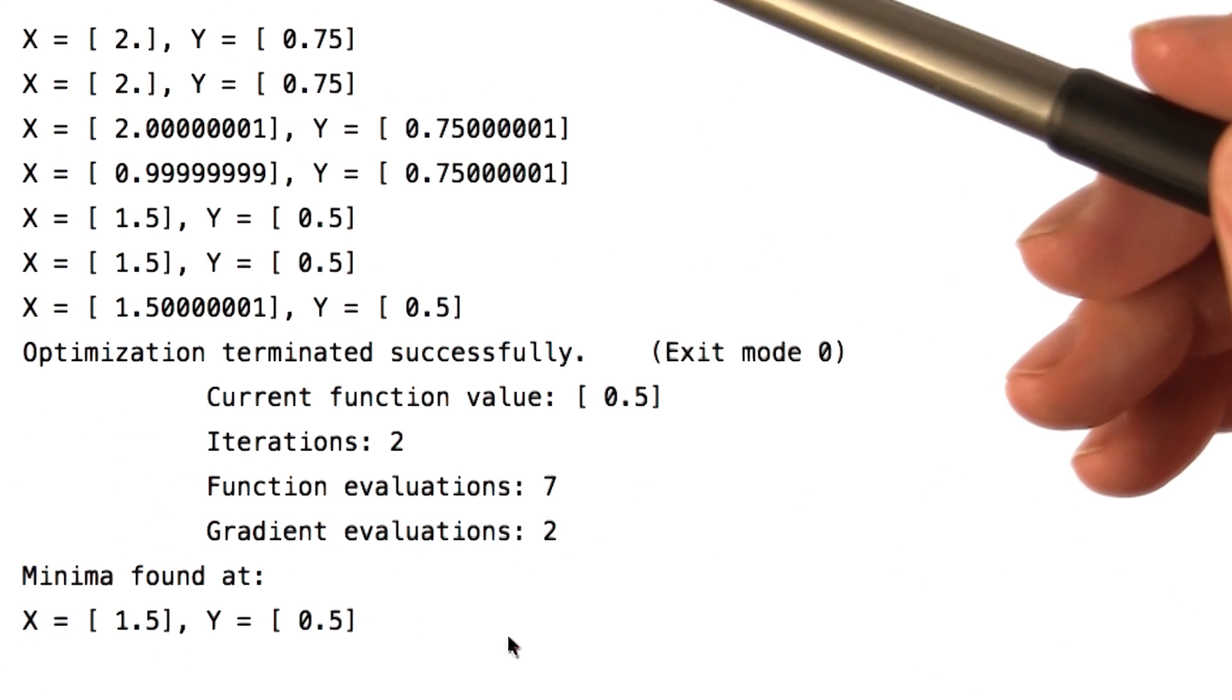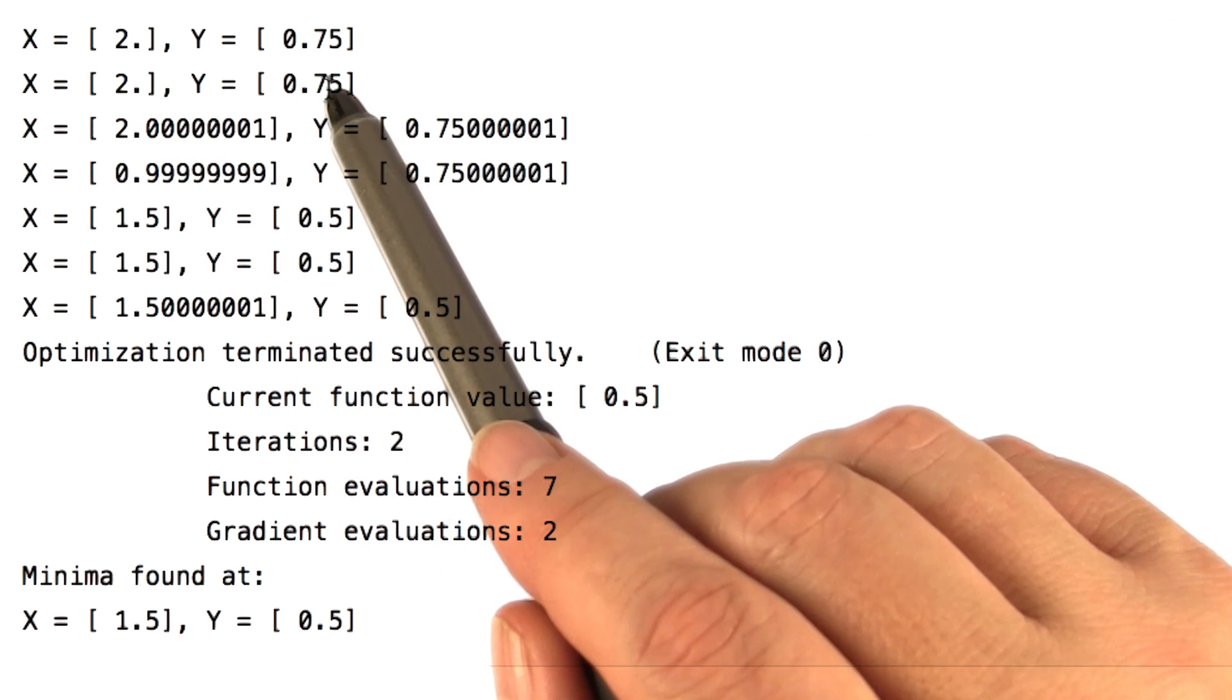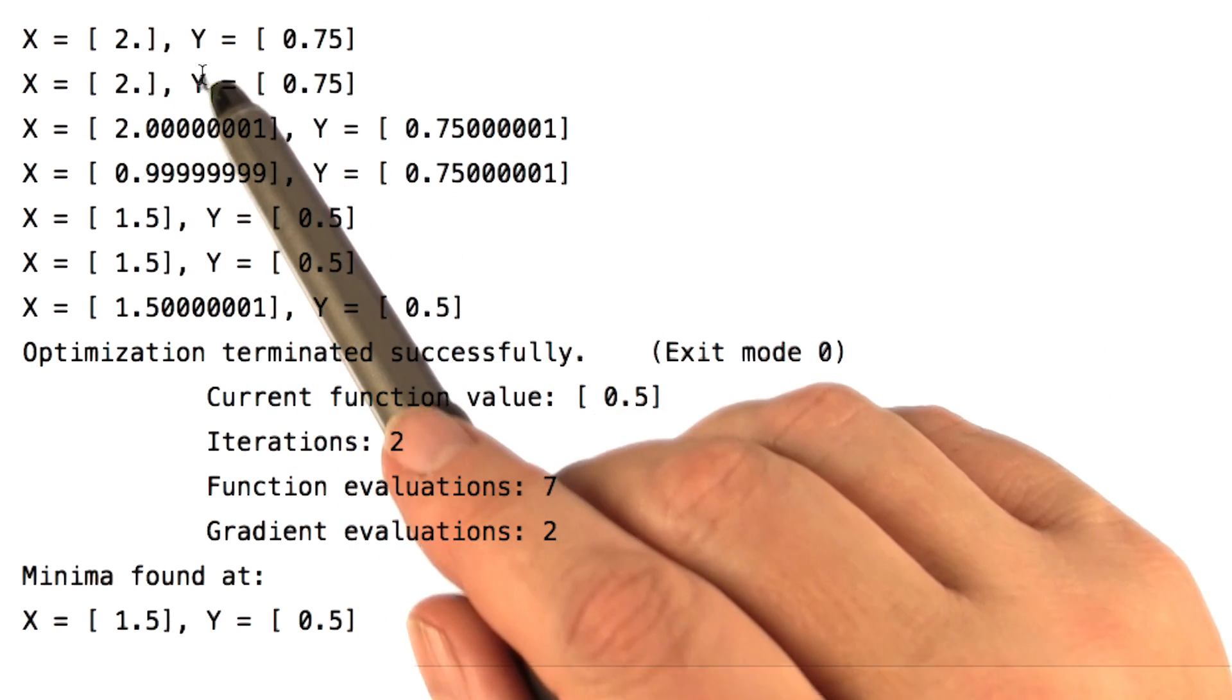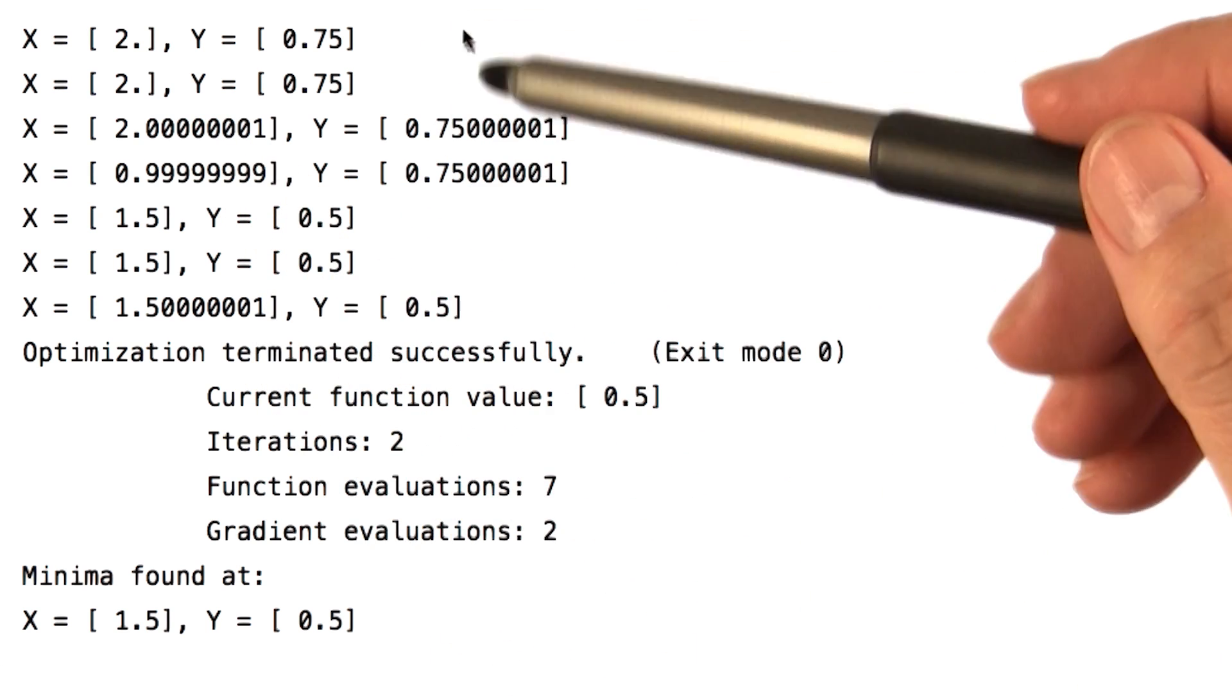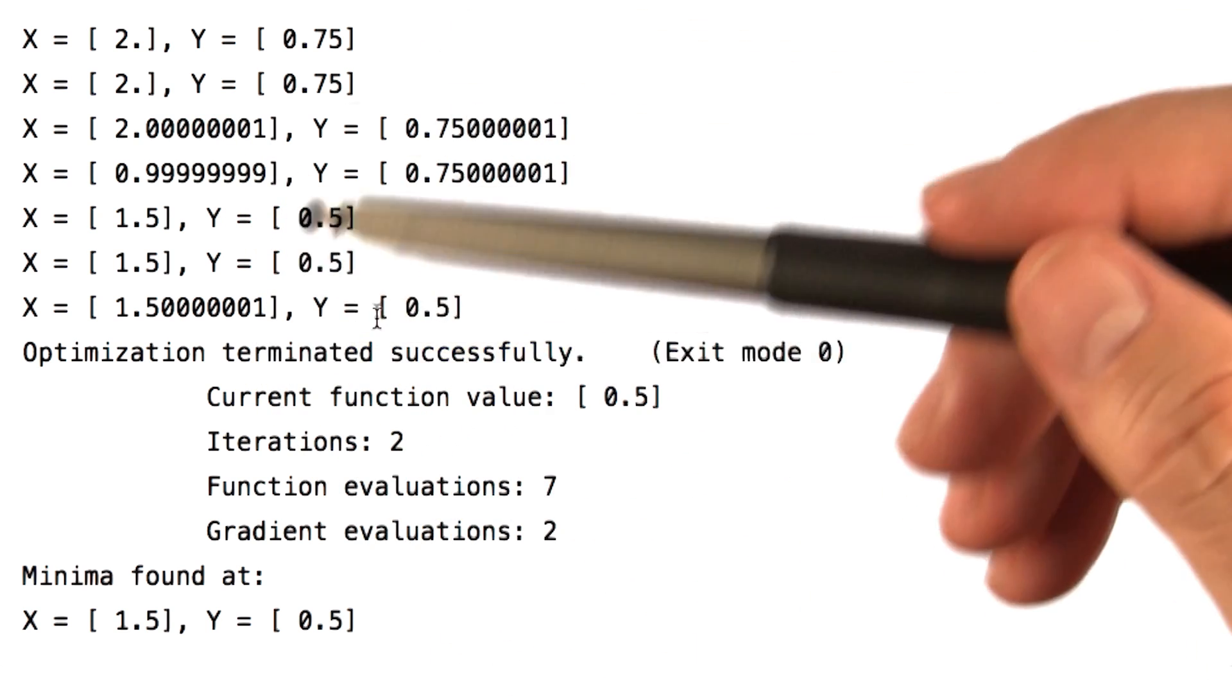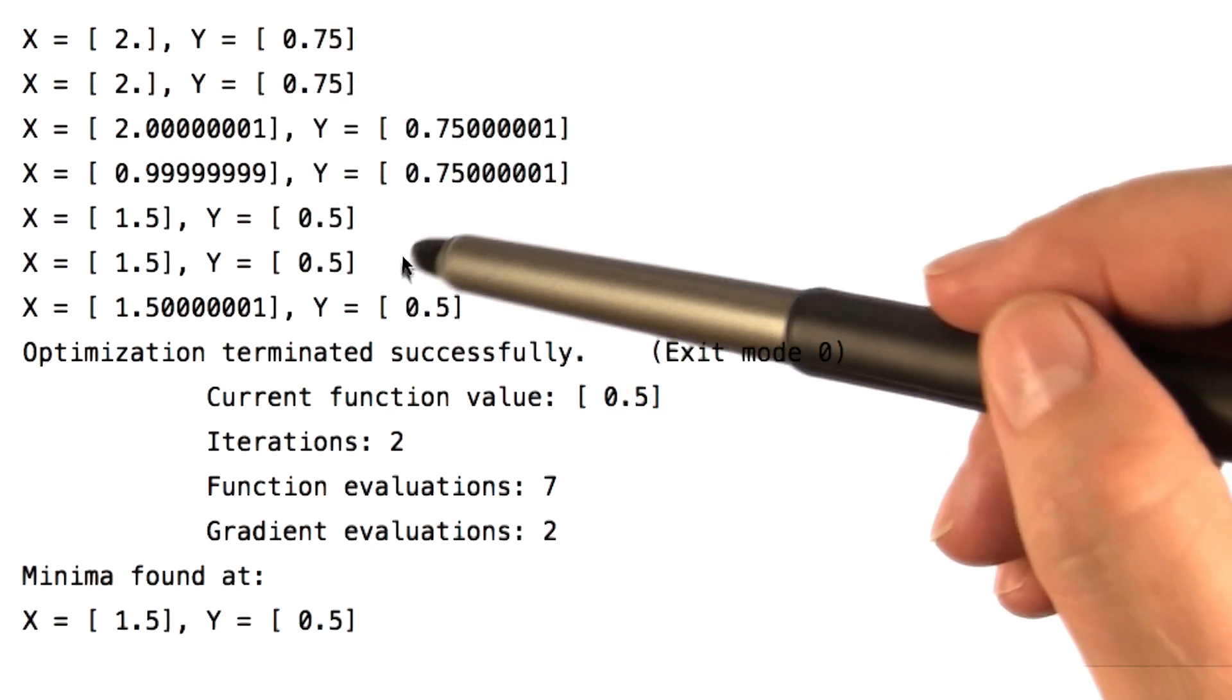Remember in our function that we wanted to minimize, we explicitly printed x and y. So here you can see each time it gets called, it prints these values out. And so the minimizer is repeatedly calling that function f, and it's printing these things out.